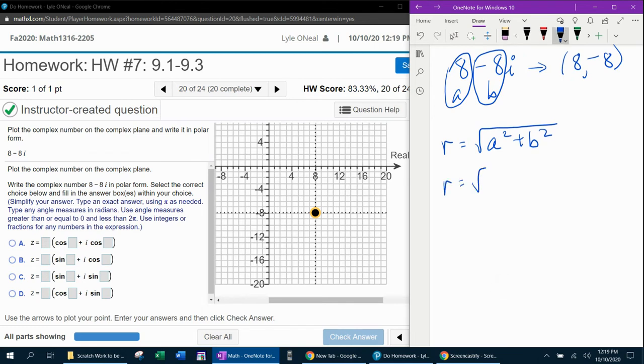Which will be the square root of 8 squared plus negative 8 squared. And that's going to be 64 plus 64, which is 128.